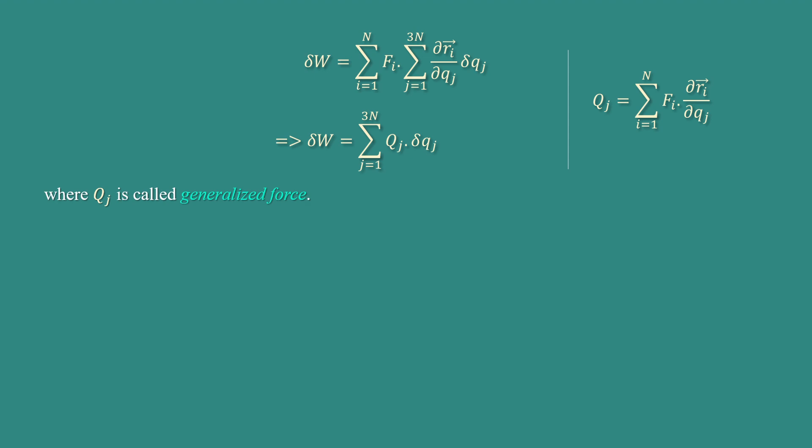Replacing Σ(i=1 to n) fi·(∂ri/∂qj) by capital Qj, we get δW = Σ(j=1 to 3n) Qj·δqj, where Qj is called the generalized force.